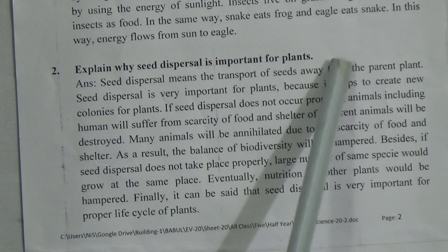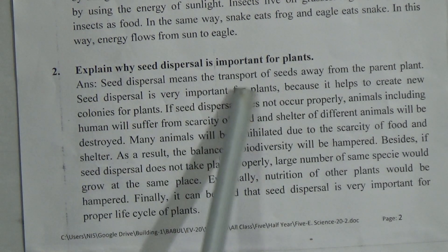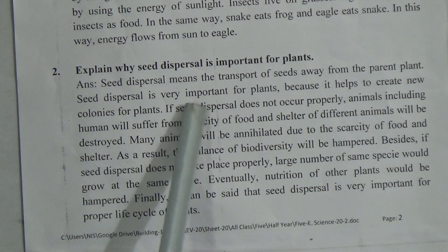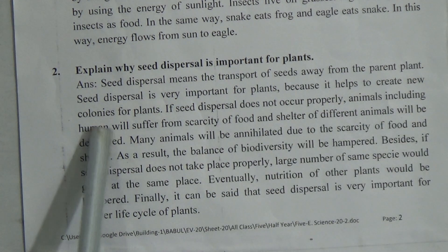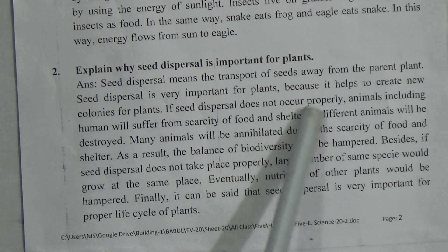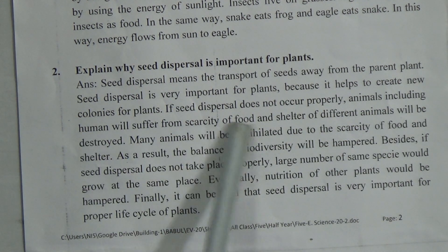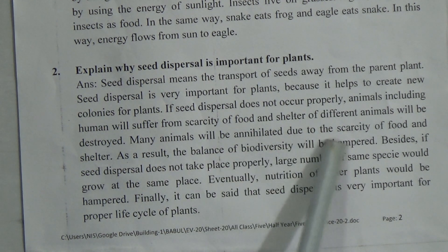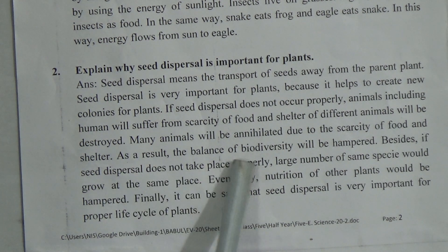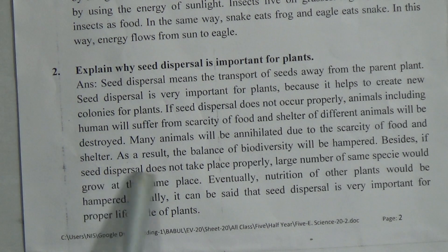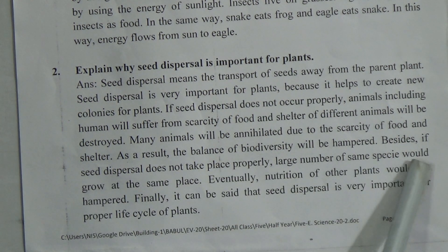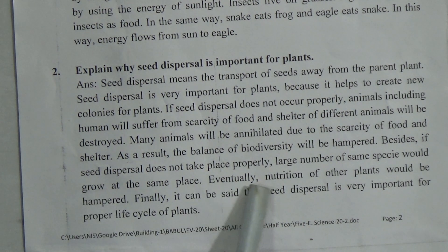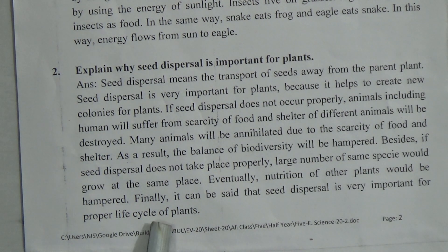Competency-based question number 2: Explain why seed dispersal is important for plants. Answer: Seed dispersal means the transport of seeds away from the parent plant. Seed dispersal is very important for plants because it helps to create new colonies for plants. If seed dispersal does not occur properly, animals including humans will suffer from scarcity of food, and the shelter of different animals will be destroyed. Many animals will be annihilated due to scarcity of food and shelter. As a result, the balance of biodiversity will be hampered. Besides, if seed dispersal does not take place properly, a large number of the same species would grow at the same place, and eventually, the nutrition of other plants could be hampered. Finally, it can be said that seed dispersal is very important for the proper life cycle of plants.